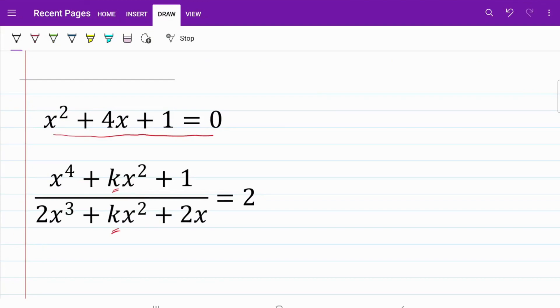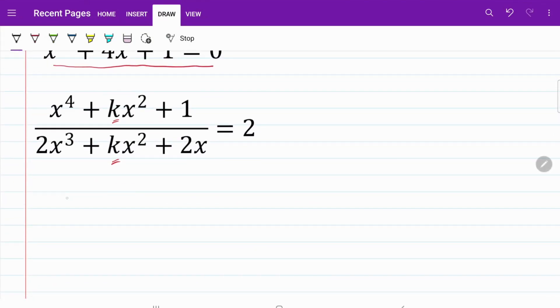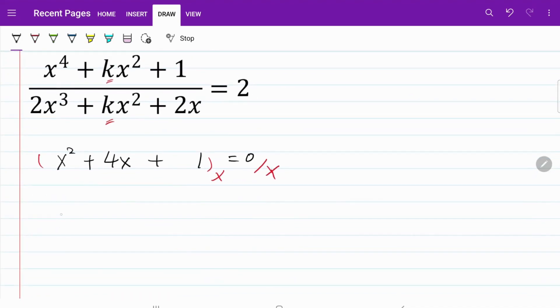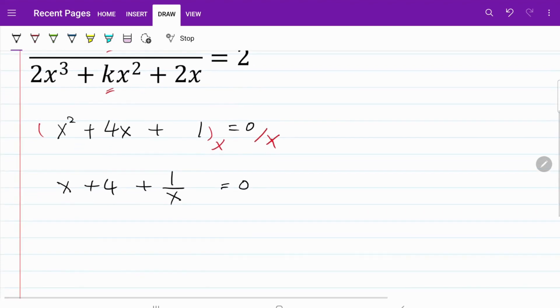Let me copy down my first equation. I have x squared plus 4x plus 1 equals 0. From here, I'm going to divide both sides by x. And if I do that on the left-hand side, I will end up with x plus 4 plus 1 over x. And on the right-hand side, that's equal to 0.